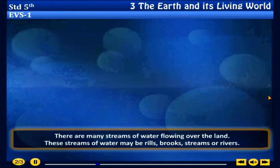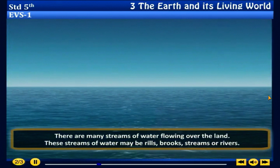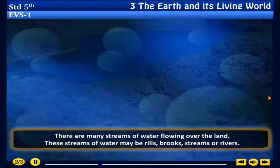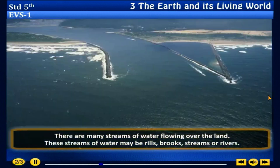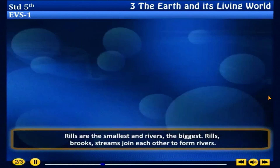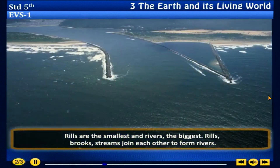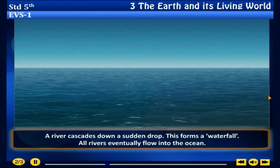Surface water: there are many streams of water flowing over the land. These streams of water may be rills, brooks, streams or rivers. Rills are the smallest and rivers the biggest. Rills, brooks and streams join each other to form rivers. A river cascades down a sudden drop, which forms a waterfall. All rivers eventually flow into the ocean.